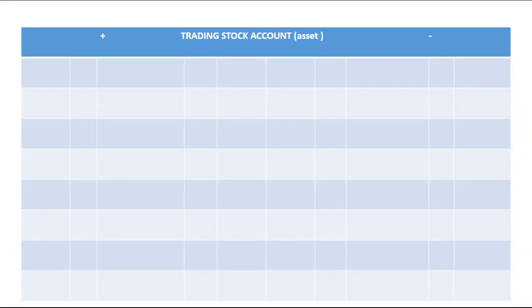Remember, trading stock will always be measured at cost price. When we measure trading stock, it'll simply be at cost price all the time. We will start by debiting it because it's an asset — your asset will increase on the debit side and decrease on the credit side. Trading stock will increase whenever we get more of it.